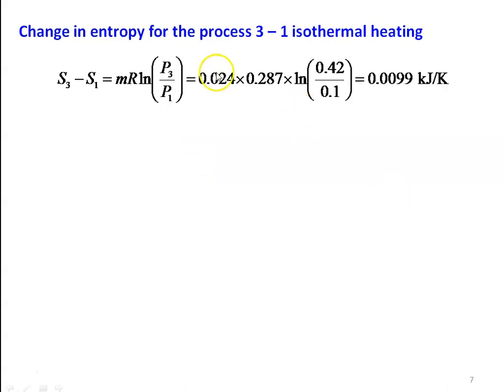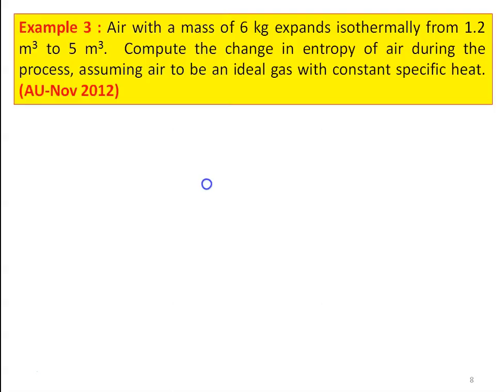For the third process, entropy change for 3–1 isothermal heating: S1 − S3 = M·R·ln(P3/P1) = 0.024 × 0.287 × ln(0.42/0.1) = 0.0099 kJ/K. We have now calculated the change in entropy for all three processes.